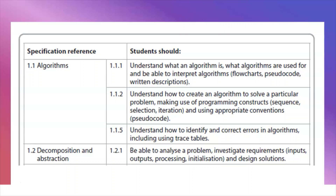Also missing is 1.1.9 fitness for purpose. What we are going to look at is 1.1.5: identify and correct errors in algorithms, including trace tables. There are a couple of questions in past papers that cover this area, so we're going to look at one now.